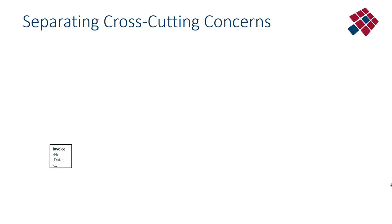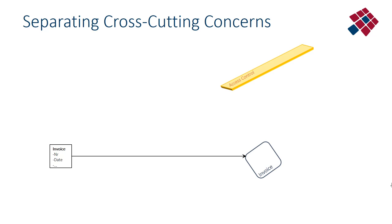Cross-cutting concerns cut right across your functional structure and everyone is faced with them. Every software system faces concerns like persistency and access control. However, using a standard solution or framework for access control does not mean you are no longer confronted with the concern. You have to connect to this framework — tap into it — and that usually takes a couple of lines of code. For instance, you have to add a couple of lines of code in your class representing an invoice, maybe some simple annotations, but you need to connect to them.